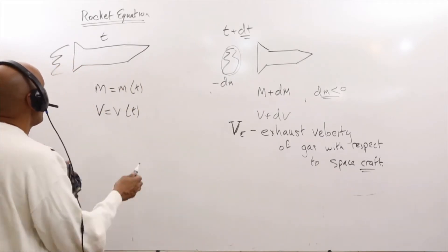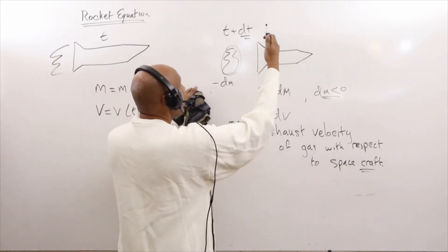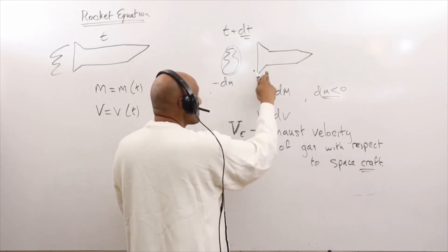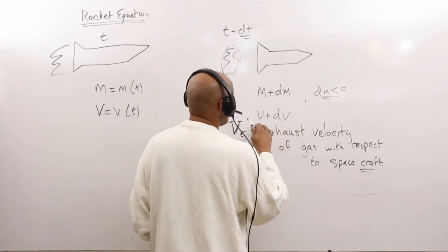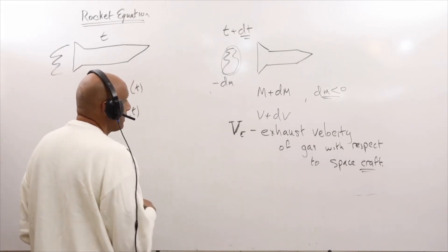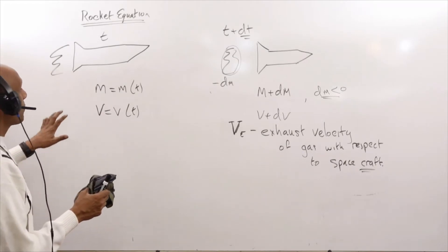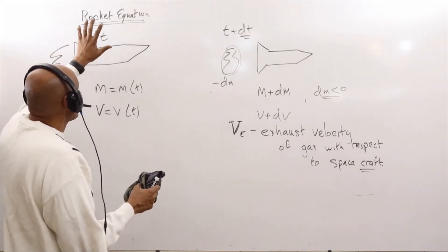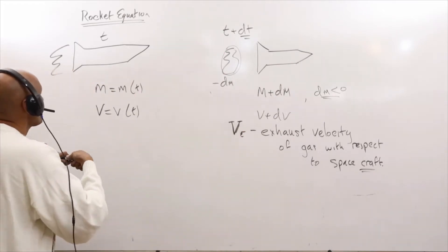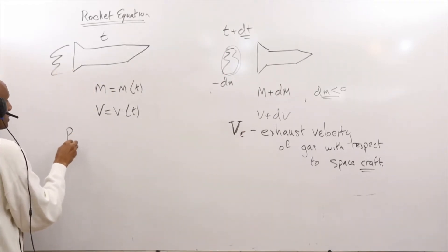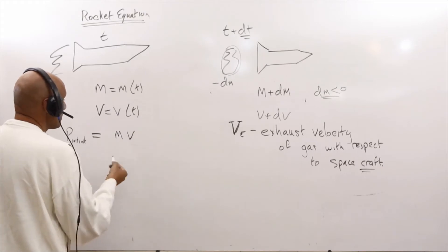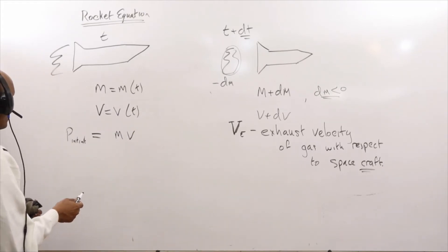So with this in mind: at time t, the mass is m; at a little time dt later, the mass has decreased into m plus dm, where dm is negative. The velocity has increased to v plus dv because it has already pushed the matter out. The exhaust velocity is capital VE. To model this whole system, we're going to use momentum conservation. Momentum conservation says the initial momentum of the rocket equals the final momentum.